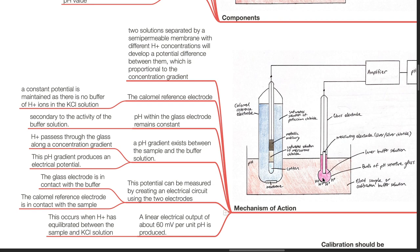A pH gradient exists between the sample and the buffer solution. Hydrogen ions pass through the glass along a concentration gradient. This pH gradient produces an electrical potential, which can be measured by creating an electrical circuit using the two electrodes. The glass electrode is in contact with the buffer, whereas the calomel reference electrode is in contact with the sample. A linear electrical output of about 60 millivolts per unit pH is produced when hydrogen ions have equilibrated between the sample and the potassium chloride solution.